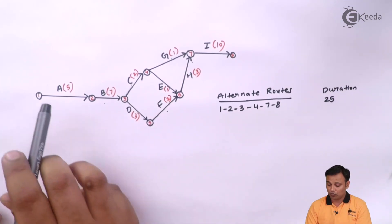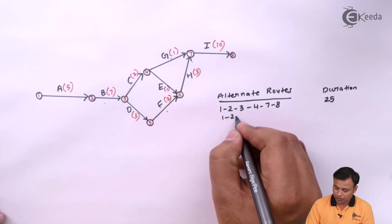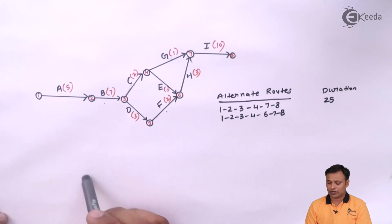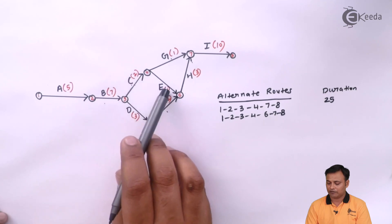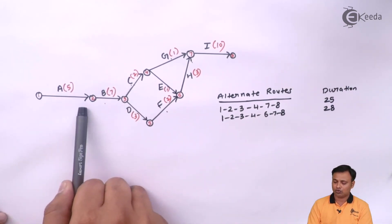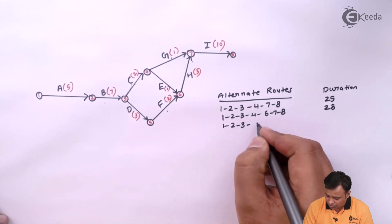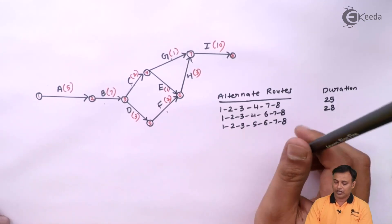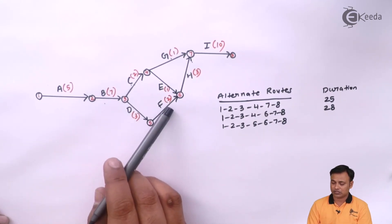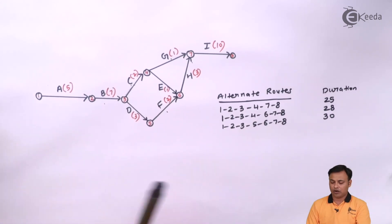Route 1→2→3→4→6→7→8 gives a duration of 28. One more route is 1→2→3→5→6→7→8, with durations 5+7+3+2+3+10 = 30.